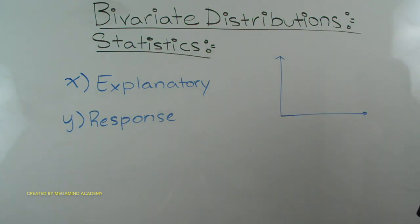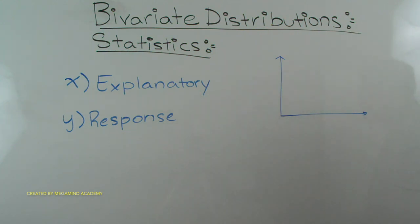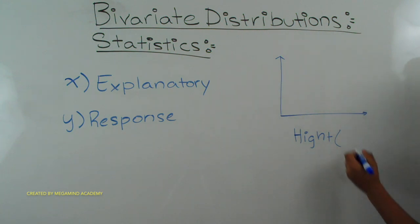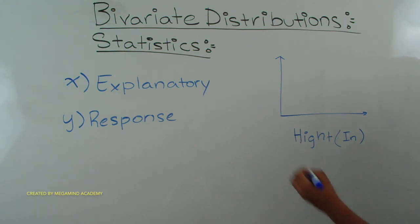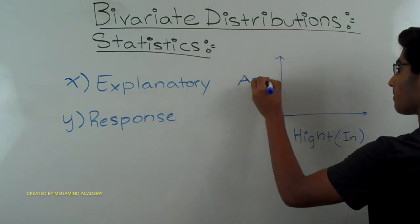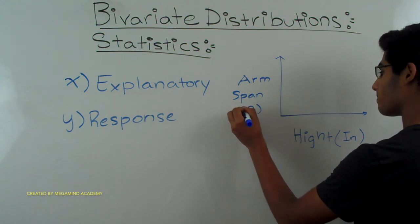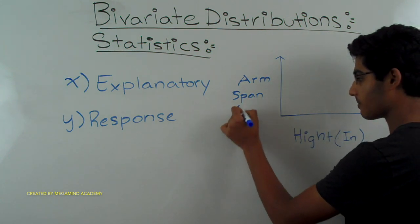So what depends on what? Well, your arm span probably depends on your height, and not the other way around. That means we should put height in inches on the x-axis as the explanatory variable, and arm span in inches on the y-axis as our response variable.